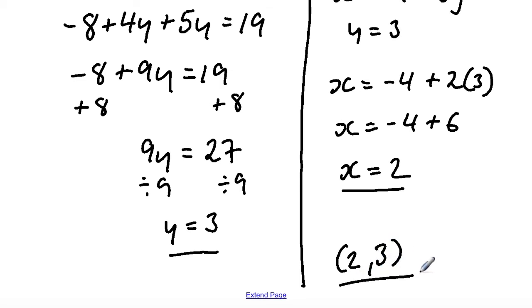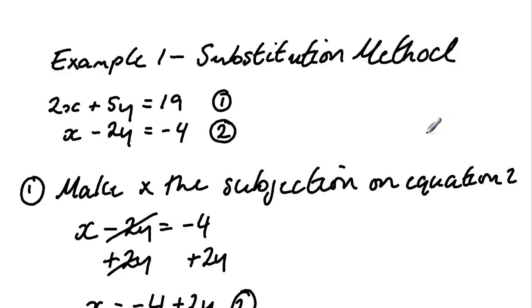Our final answer is the value of x equals 2 and the value of y equals 3. This method we've used is called the substitution method.